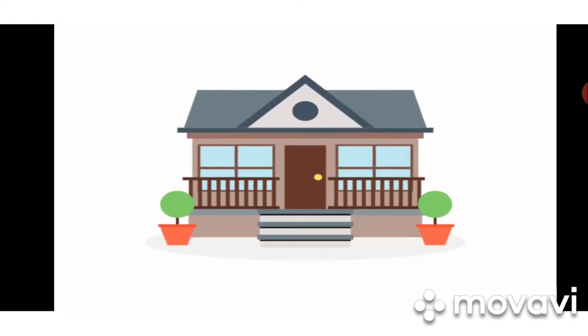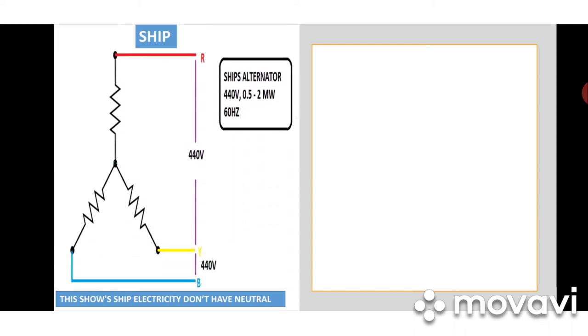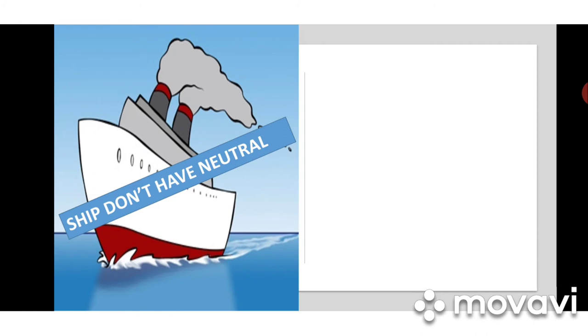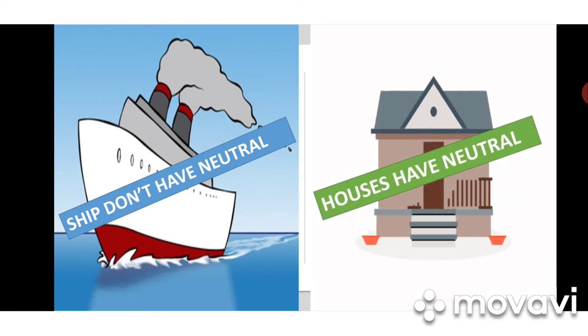Now we will see the difference between ship electricity and home electricity. In a ship, we don't have a neutral — that is a major difference. In your home socket, we have phase and neutral. But in a ship there is no neutral, so we use phase and phase. This is shown in the ship alternator diagram — no neutral is taken from the generator. In the power plant, they take a neutral point from the generator.